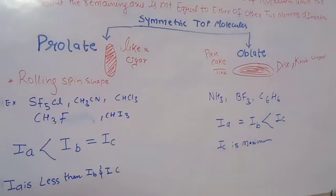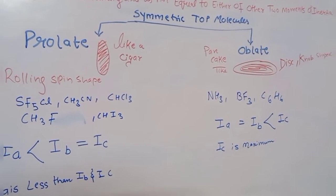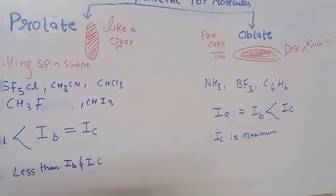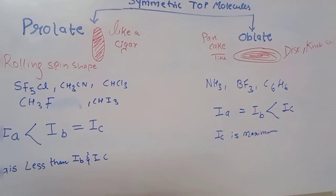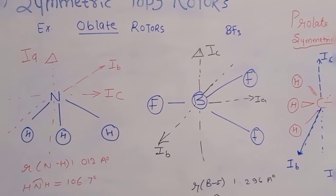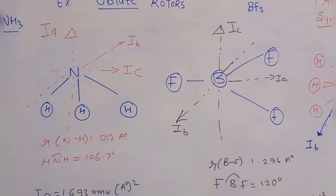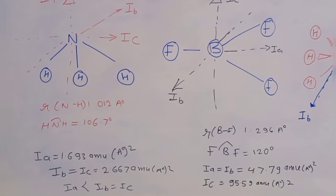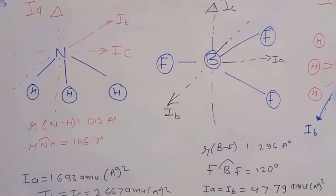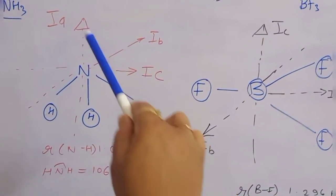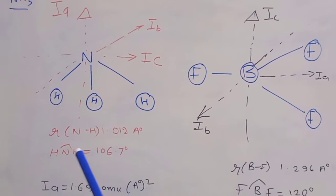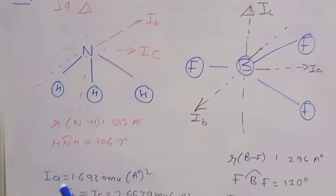Oblate symmetric top molecules have examples including NH3, BF3, and benzene. The condition is Ia = Ib < Ic — two equal smaller moments of inertia, and the third (Ic) is the largest. For NH3 (pyramidal shape): r(N–H) = 1.012 Å, bond angle = 106.7°, Ia = 1.693 amu·Å², and Ib = Ic (both larger than Ia).